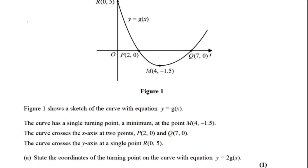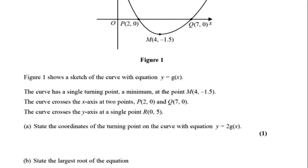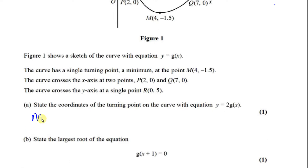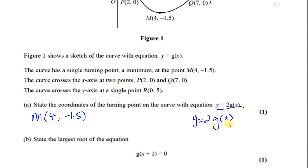Part (a) says: state the coordinates of the turning point of the curve with the equation Y equals 2G of X. The turning point is M, with coordinates (4, -1.5). The transformation Y equals 2G of X means the whole function is being multiplied by 2 — the 2 is outside the function, not replacing X with 2X. When you're multiplying, it's always going to be some sort of a stretch. When the multiplier is outside the function, it's called a vertical stretch.